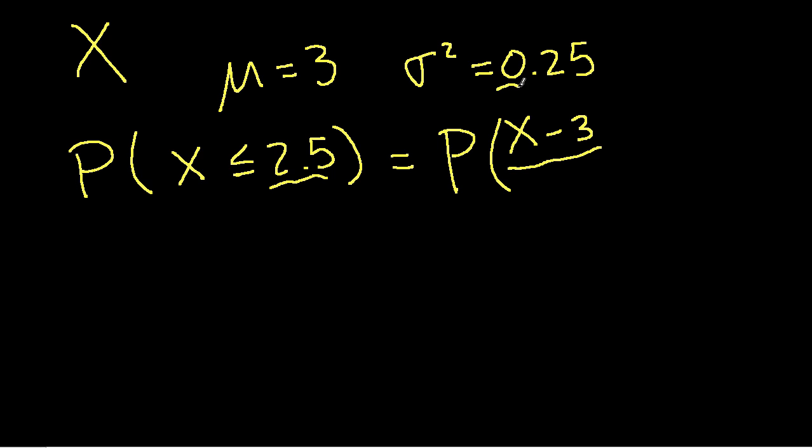Now the standard deviation is the square root of the variance. So we would divide by 0.5, the probability that X minus 3 over 0.5 is less than 2.5 minus 3 over 0.5.